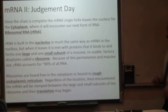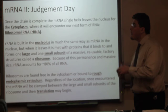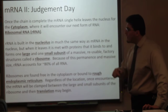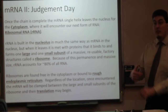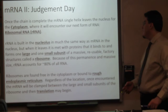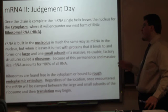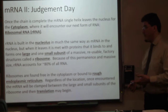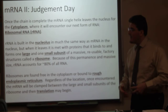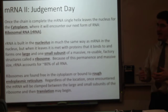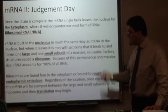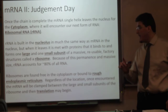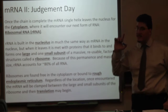Once the chain is complete, the mRNA single helix leaves the nucleus for the cytoplasm, where we encounter our next form of RNA: ribosomal RNA, or rRNA. rRNA is built in the nucleolus much the same way as mRNA — it must be transcribed as well. When it leaves, it is met with proteins it binds to and forms one large and one small subunit of a massive, reusable factory-type structure called a ribosome. Because of this permanence and size, rRNA accounts for about 80% of all RNA in the cell. Ribosomes are found free in the cytoplasm or bound to rough endoplasmic reticulum. Once encountered, the mRNA will be clamped between the large and small ribosomal subunits, and then translation may begin.